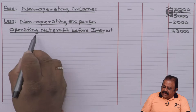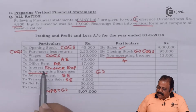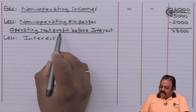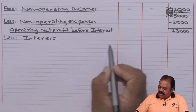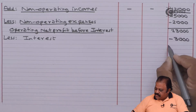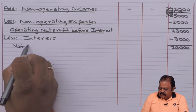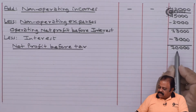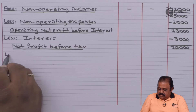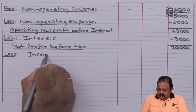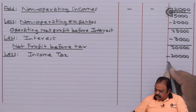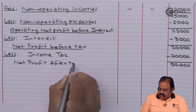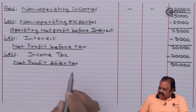Thereby we arrive at net profit before interest of 73,000. Interest is 3,000, so 73,000 minus 3,000 gives net profit before tax of 70,000. Income tax is 20,000.